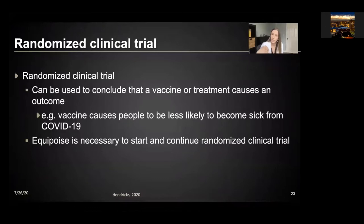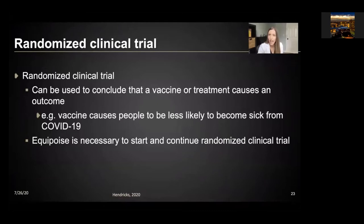To summarize: a randomized clinical trial can be used to conclude that a vaccine or treatment causes an outcome like a reduction in COVID-19. Equipoise, or an ethical balance, is necessary to start and to continue a randomized clinical trial.